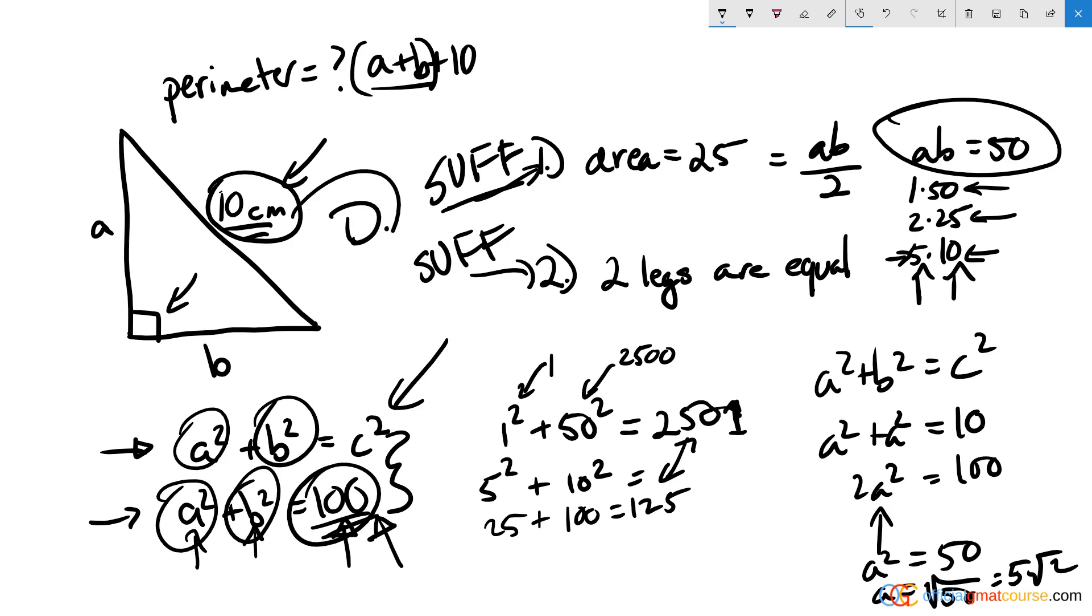And that means we have an answer choice of answer choice D. So again, thinking big picture about do we have multiple situations or not. Because in a value question, you need to nail this—it has to be exactly one value.